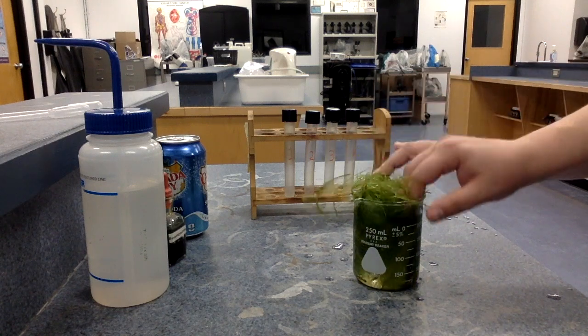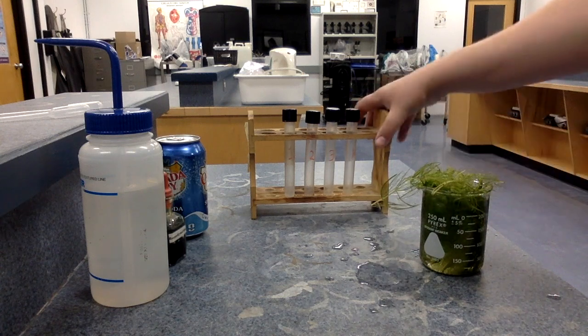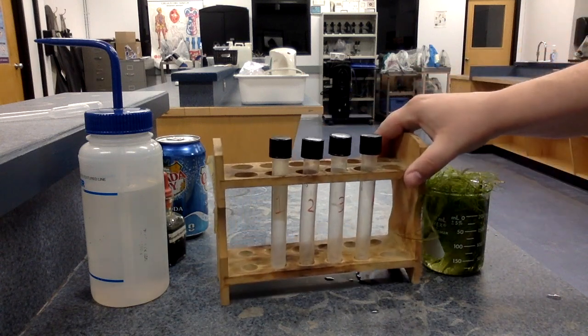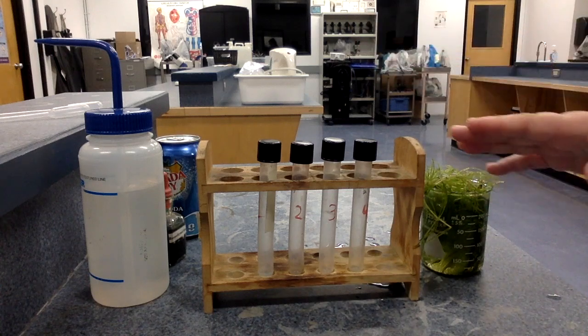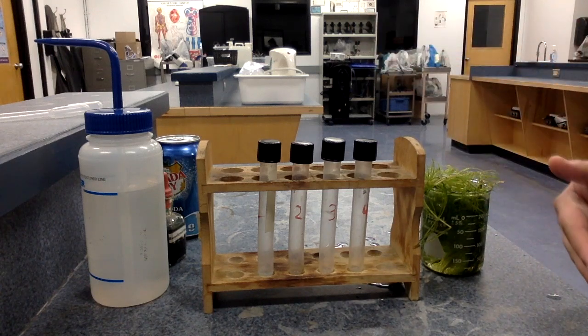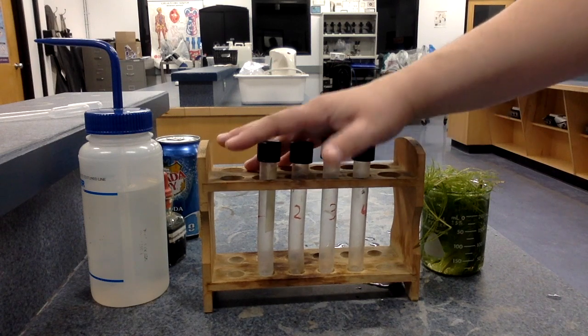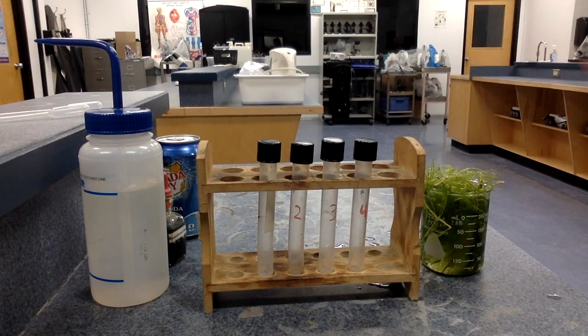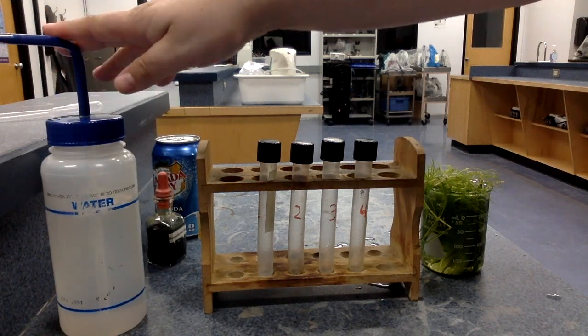So I've got this aquatic plant and it's going to be my little photosynthesizer. I've set up these test tubes labeled them one to four. What we're going to do is in various combinations we're going to have distilled water, which is just pure water.